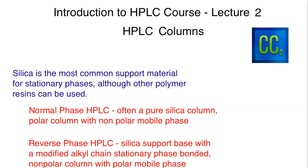Let's get started by talking about silica, because silica is the most common support material you're going to find in HPLC columns, bar none. There are other polymer resins that can be used — that tends to be more common in ion exchange. That is due to silica being very sensitive to pH changes. When you have very acidic conditions with certain types of silica columns it becomes problematic, and when you have very basic conditions it also becomes very problematic, breaking apart the silica bedding and basically destroying your column prematurely.